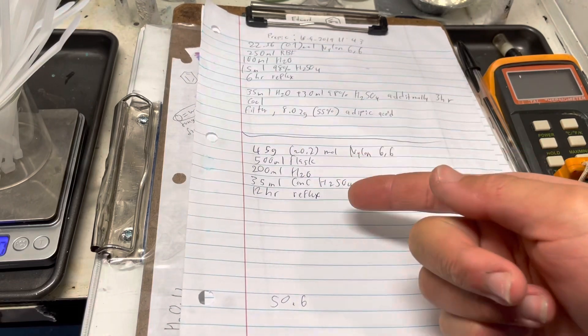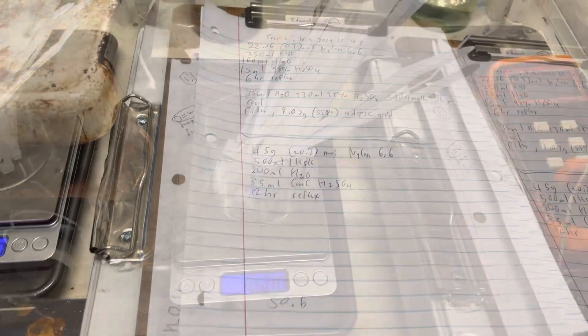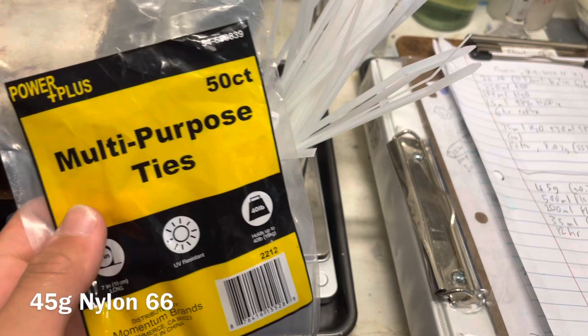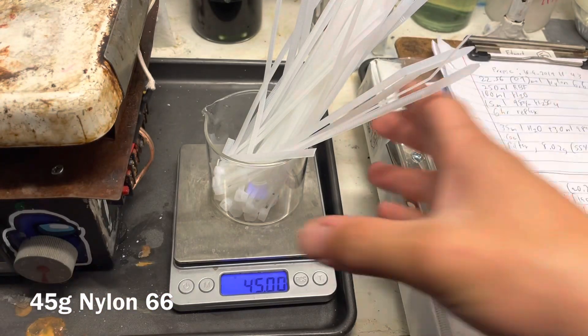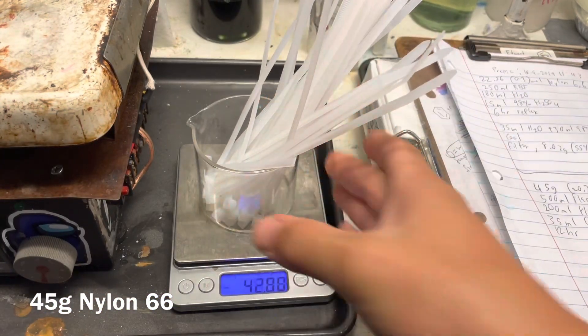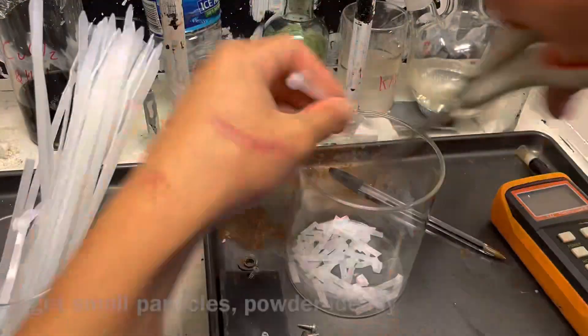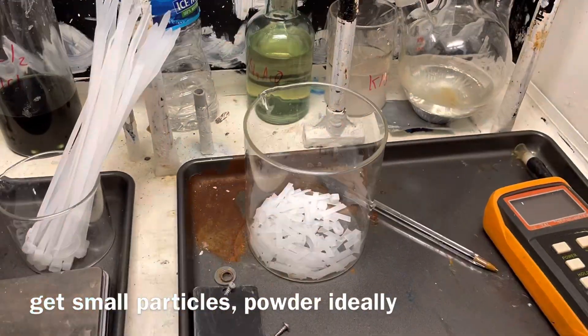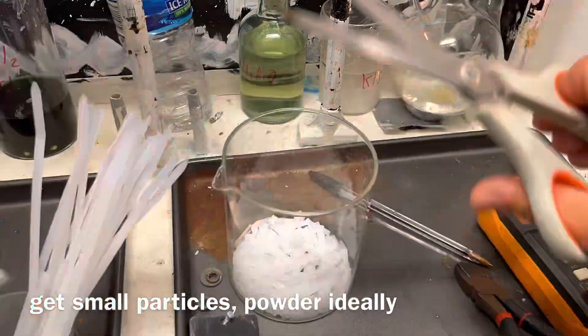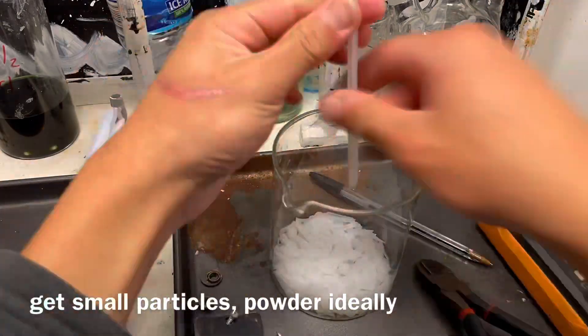It's not the most efficient method, but I guess if you can't get adipic acid any other way, this is a viable method. This is a scaled-up procedure from a Science Madness post. Link is in the description. More surface area means faster reaction.